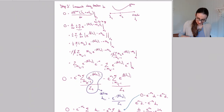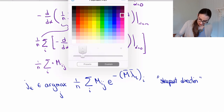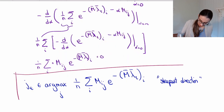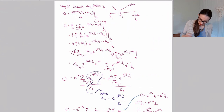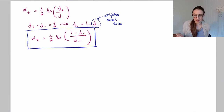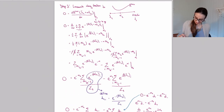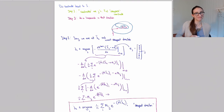To review: in the line search we first found which direction to travel in, then performed the line search in that direction and ended up with the formula involving the weighted misclassification error that AdaBoost uses. That formula tells us how far to travel in direction j_t.